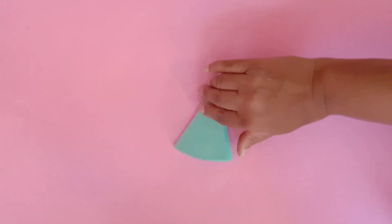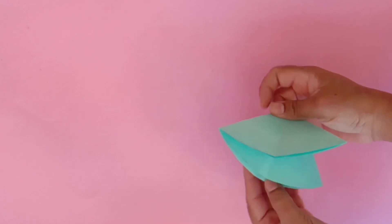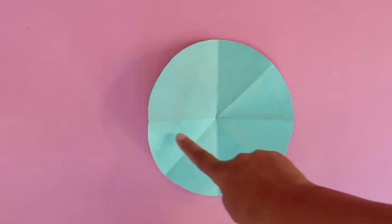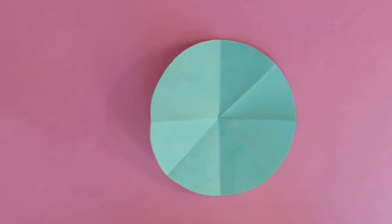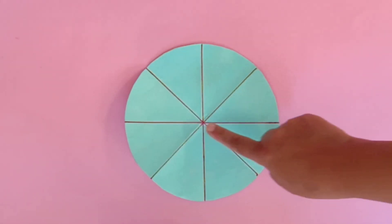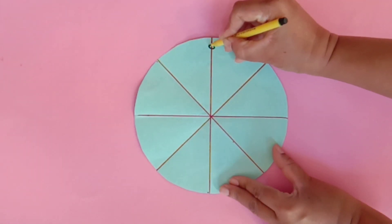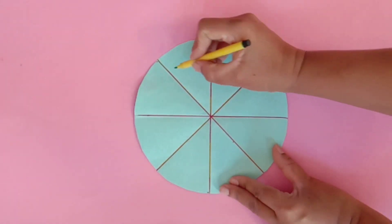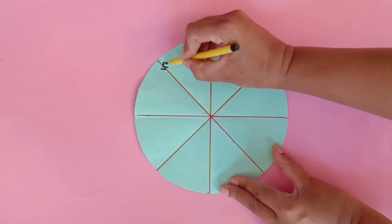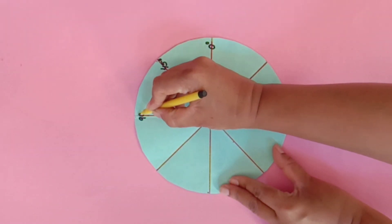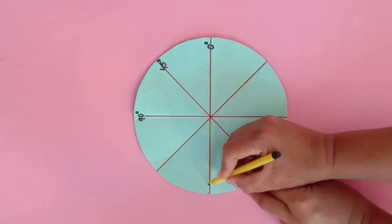Now open the page. You will see the lines like this. Now we will draw lines with colorful pencil or sketch color. See here, we have drawn all the lines. Now you will write angles on these lines as shown: 0 degree, 45 degree, 90 degree, 180 degree, etc.